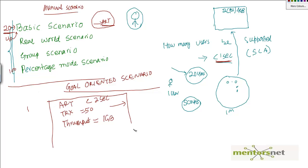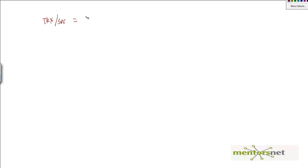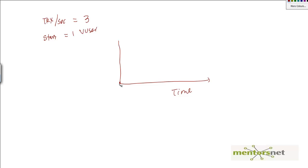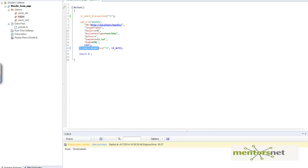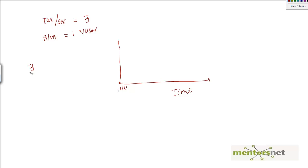Once you give the LoadRunner controller a goal — say, transactions per second should equal 3 — and tell it to start with one virtual user, here is what happens. At time t=0 the scenario starts with one virtual user running the sample script. With one virtual user, let's say it gets one transaction per second. That means with one virtual user we cannot achieve the stated goal of 3 transactions per second.